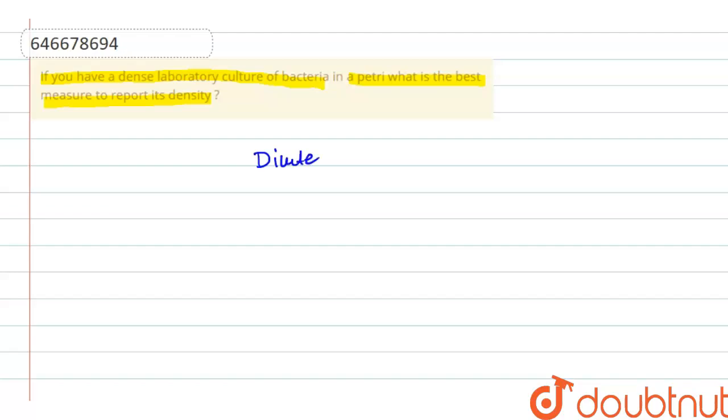a part of bacteria by 100 times in order to find its density. So there is a unit known as CFU